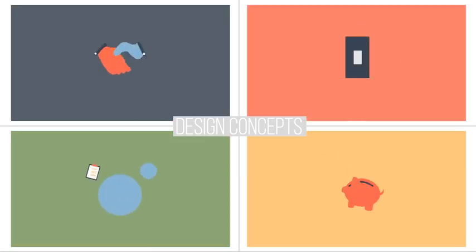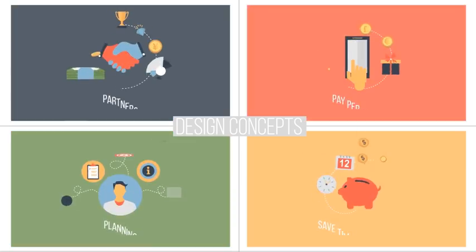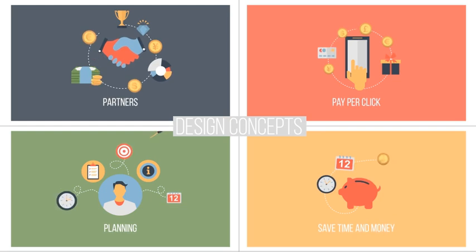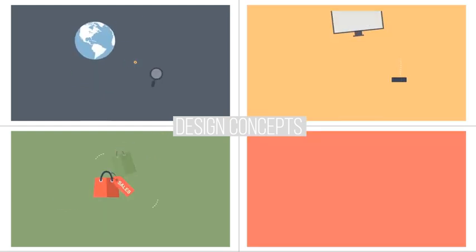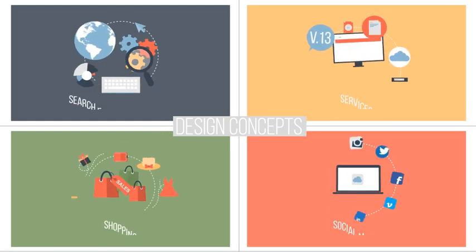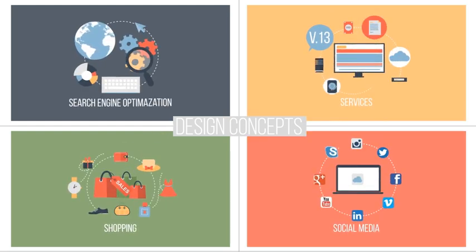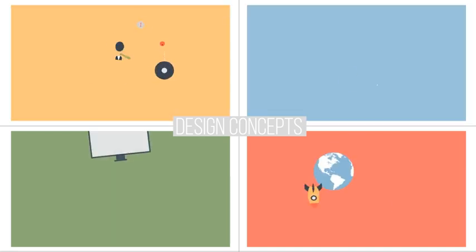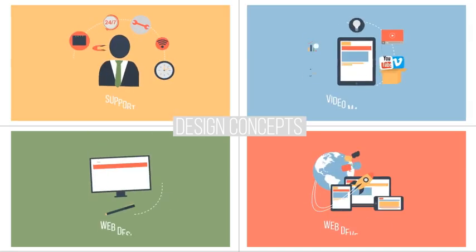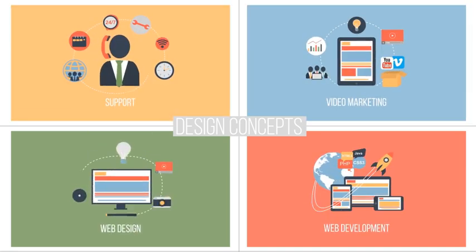Finally, you can control all flat animated icons with a seven color control. Does your project need only two or three colors? Just put the same colors on the rest of them and find the desirable result.